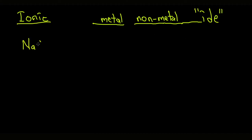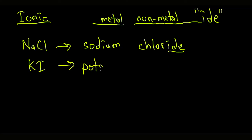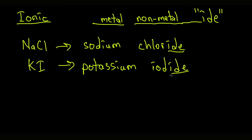For example, if we have NaCl, the name is going to be the metal, which is sodium — no changes there. Then it's chlorine, but instead of writing chlorine with I-N-E, you're going to substitute the ending with I-D-E, giving you sodium chloride. Another example would be KI: potassium as the metal, and iodine as the non-metal, where we replace I-N-E with I-D-E to get iodide, giving potassium iodide.